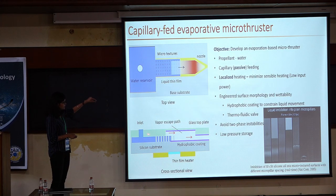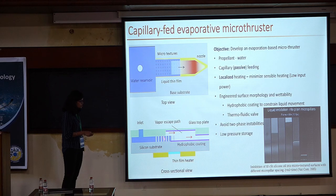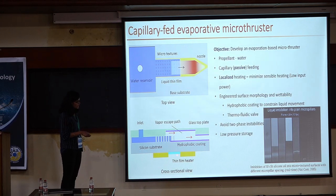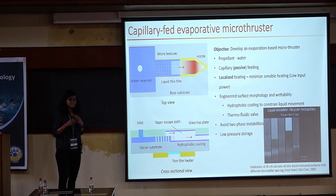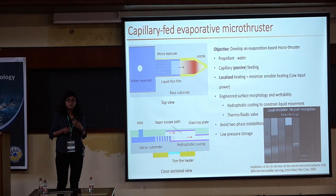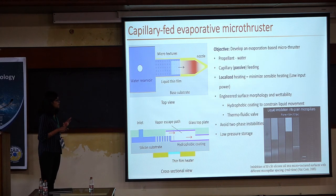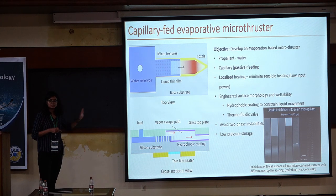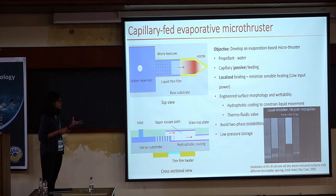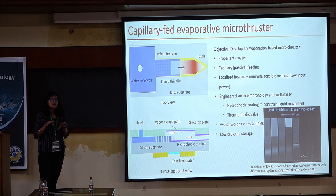This is a top view and this is a side view. We have an inlet port and these porous structures. The liquid imbibes into the porous structure, and at the back side we have a thin film heater. We are not heating the entire bulk of liquid — we heat only a tiny amount that has imbibed into the texture, and the vapor passes through a nozzle to produce thrust. This works without any active parts and without a high-pressure storage requirement. The engineered hydrophobic-hydrophilic porous network acts as a thermofluidic valve.